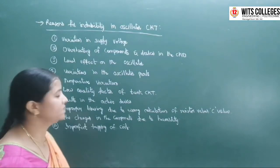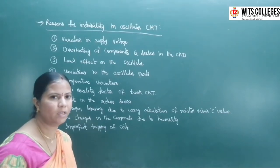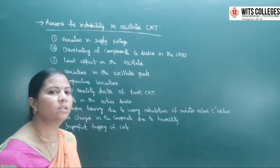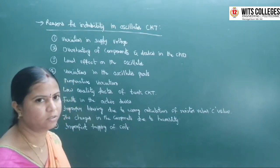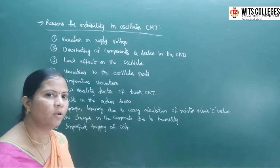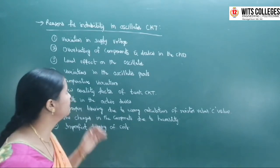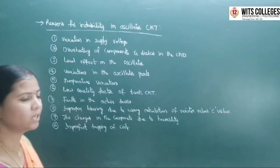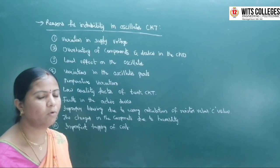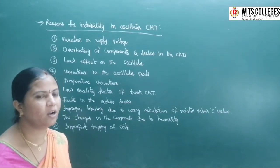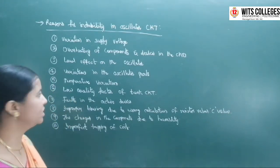The next topic is: what are the reasons for instability in oscillator circuits? Instability means the amplitude and frequency of the output oscillations is changing. The first reason is variation in supply voltages — if you vary the supply voltage in circuits like Hartley or Colpitts oscillators, there is instability of oscillations.